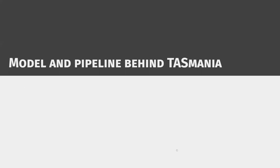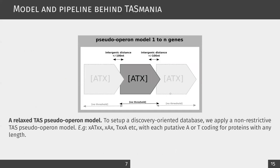I will now describe the model and pipeline used to build Tasmania. The main characteristic is its pseudo-operon-tier model. Unlike the canonical model that defines a TAS as a two-gene operon, we designed a model with no assumption about the organization of the operon hosting the TAS. For example, a TAS could be located within a pseudo-polycistronic operon structured as XATXX, with X being a gene not annotated as TA.